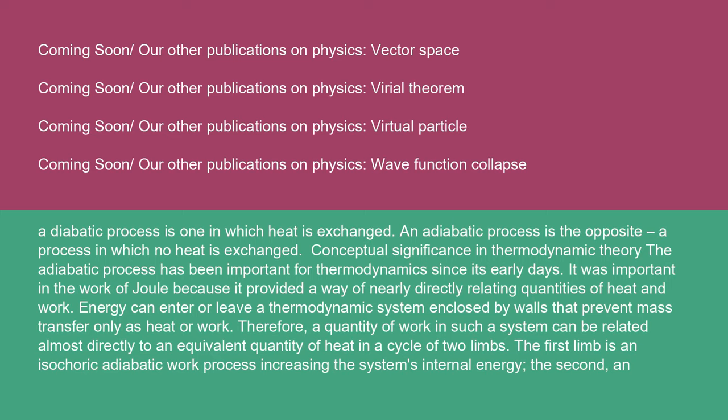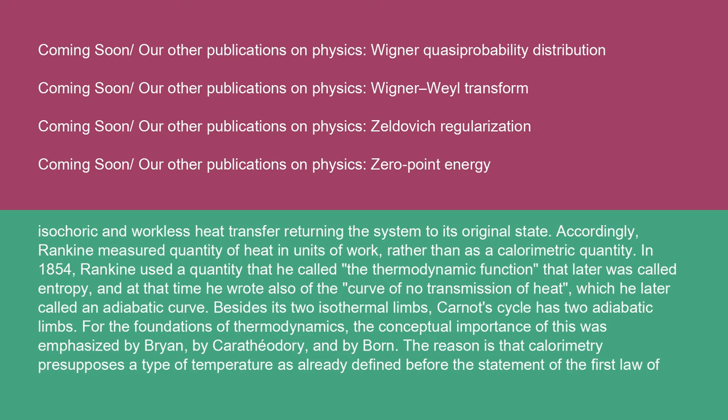Conceptual significance in thermodynamic theory: the adiabatic process has been important for thermodynamics since its early days. It was important in the work of Joule because it provided a way of nearly directly relating quantities of heat and work. Energy can enter or leave a thermodynamic system enclosed by walls that prevent mass transfer only as heat or work. Therefore, a quantity of work in such a system can be related almost directly to an equivalent quantity of heat in a cycle of two limbs: the first limb is an isochoric adiabatic work process increasing the system's internal energy, and the second is an isochoric, workless heat transfer returning the system to its original state. Accordingly, Rankine measured quantity of heat in units of work rather than as a calorimetric quantity.